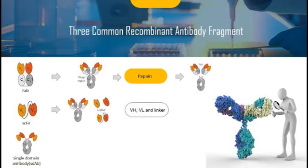Single chain fragment variable, scFv molecules, combine the coding sequence of the variable heavy VH and the variable light chain VL domains of an antibody in a single gene-encoded format. The resulting polypeptide, with the VL and VH domains connected by a flexible peptide linker, is assembled into a functional antigen binding site. The linker technology is a key step in the success of constructing an scFv antibody library.